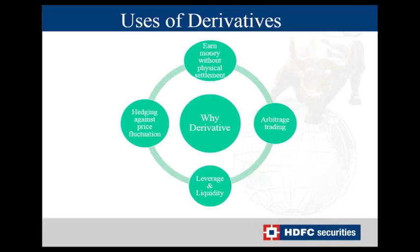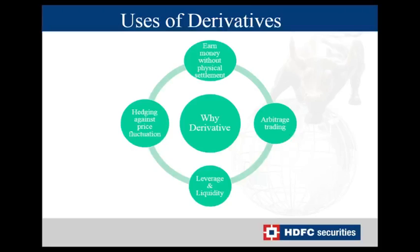Another use is arbitrage trading — taking advantage of mispricing between two different markets. You buy a stock in one market and sell the same stock in another market where there is a price difference. Leverage is another key advantage, where you use a small margin amount to get higher exposure to trade. Along with leverage, we also have liquidity — the number of buyers and sellers in a particular underlying — which the exchange ensures for all 237 stocks in the derivative market.